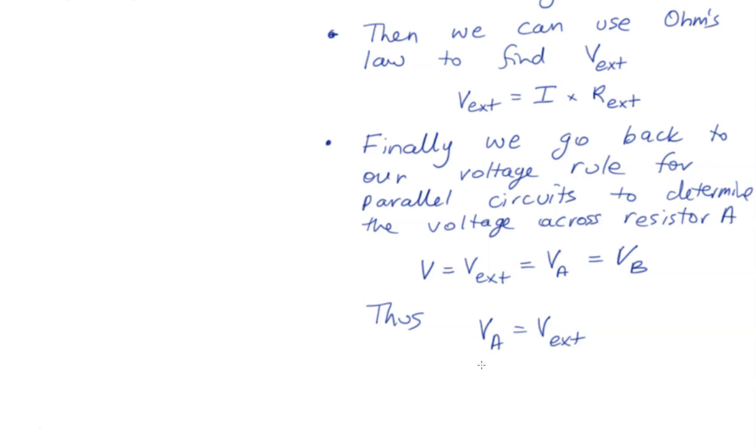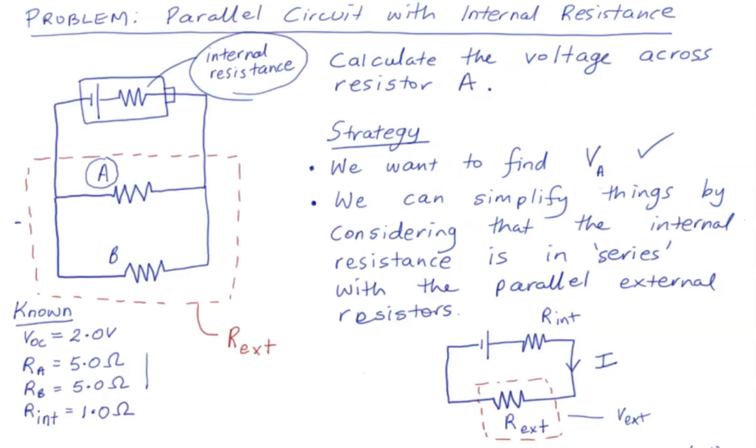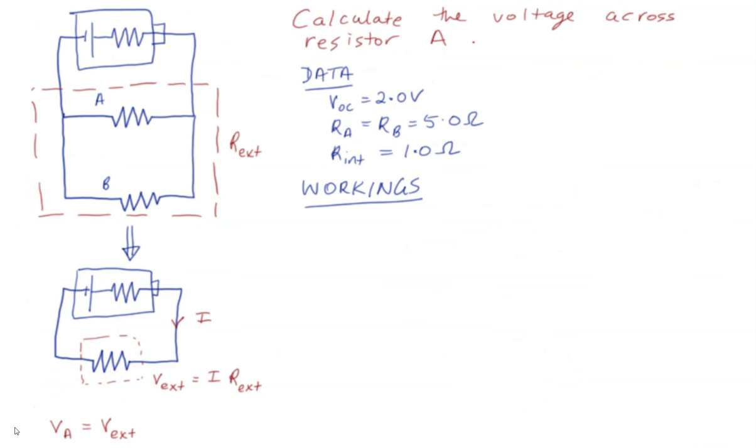So we can say that voltage A equals voltage of the external resistance. So let's go through the workings then step by step. Okay, step one is find the total resistance of the external circuit.